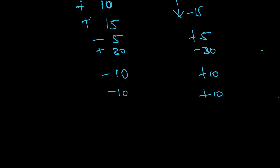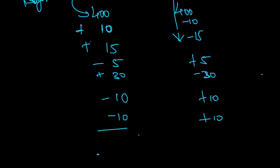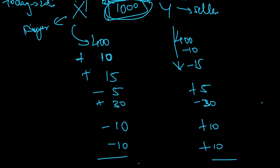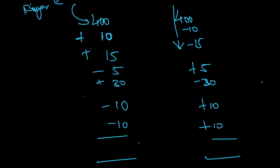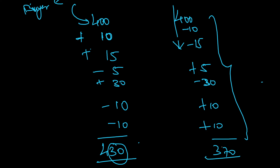Now let's count the final result. Mr. X, the buyer, brought in 400 and got exposure to a contract worth 1000. If I calculate all the daily settlements, his account comes to 430. That means he brought in 400 and got 430, gaining 30 extra. That means the seller should be losing 30, so the seller should have 370.